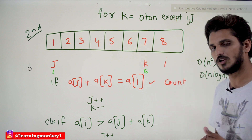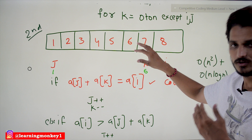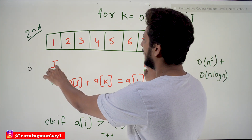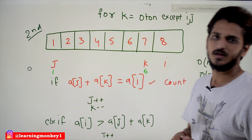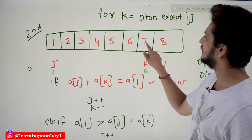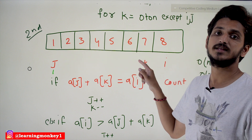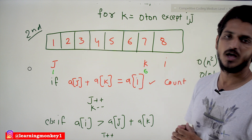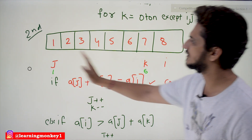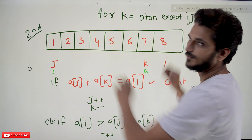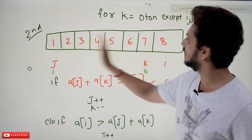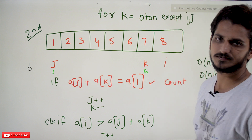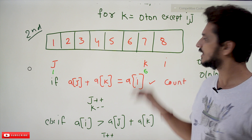After sorting, the logic goes like this: take an element as the i-th element. Use two variables j and k — j pointing to the smallest (leftmost) element and k pointing just before i. Check a[j] + a[k]: for example, 7 + 1 = 8. Increment the count — we have formed a triplet. Then do k-- and j++, since this combination formed a valid triplet.